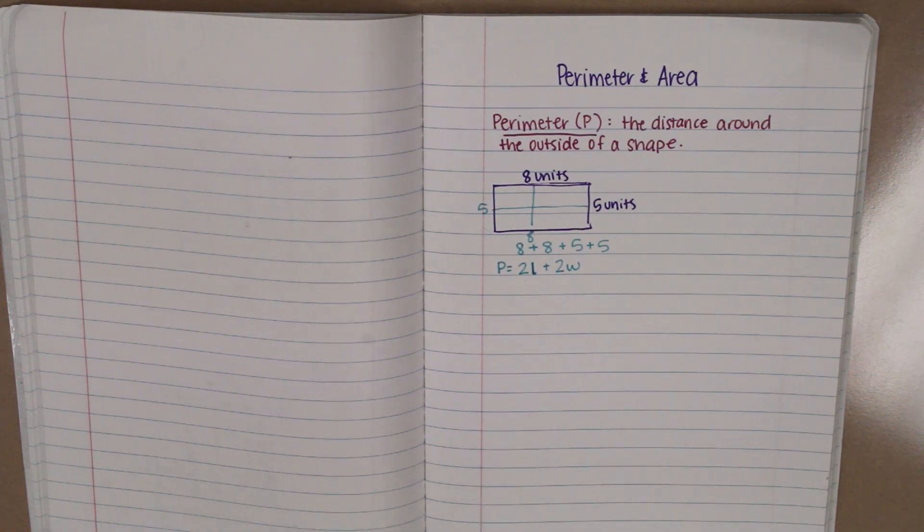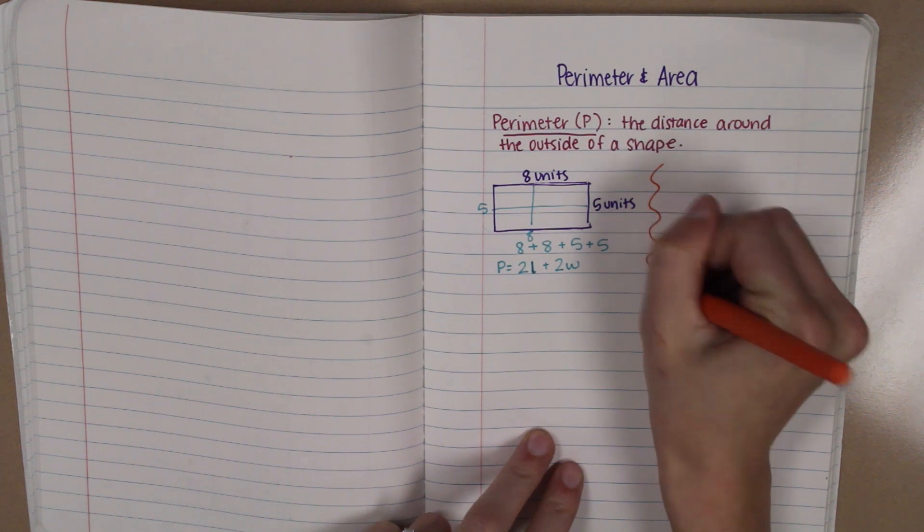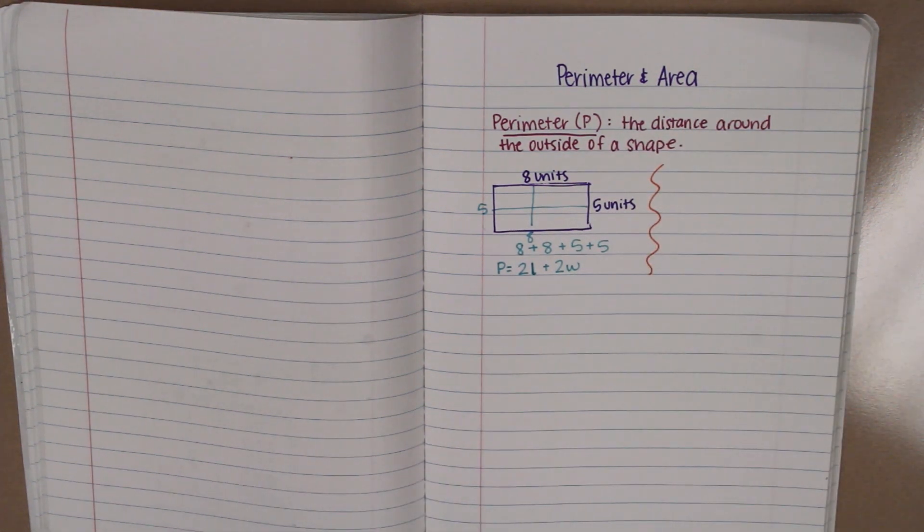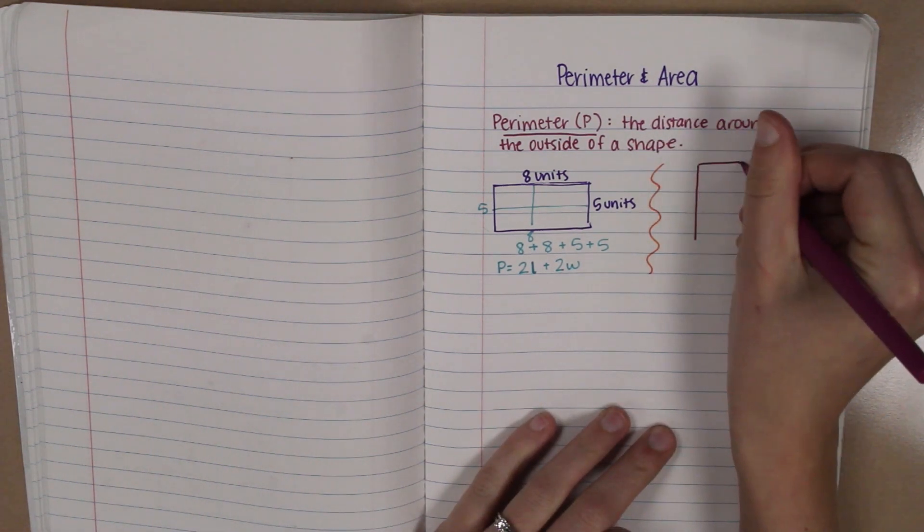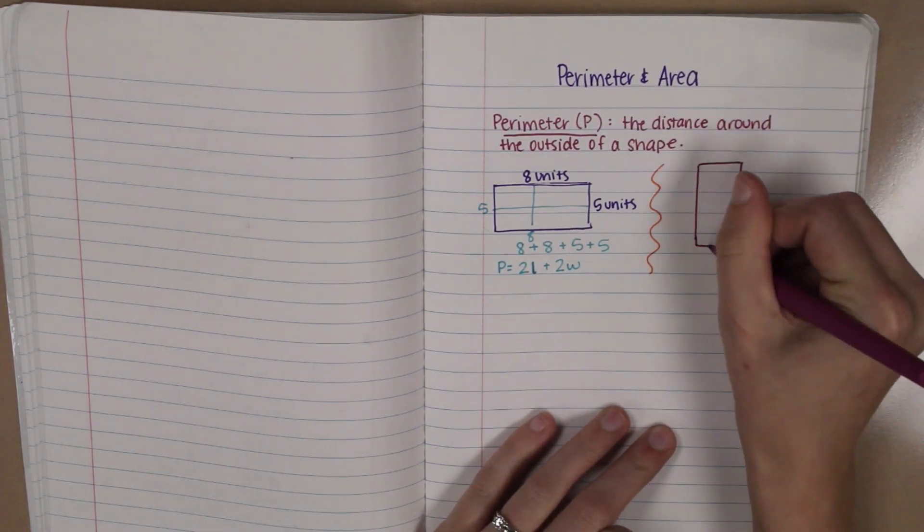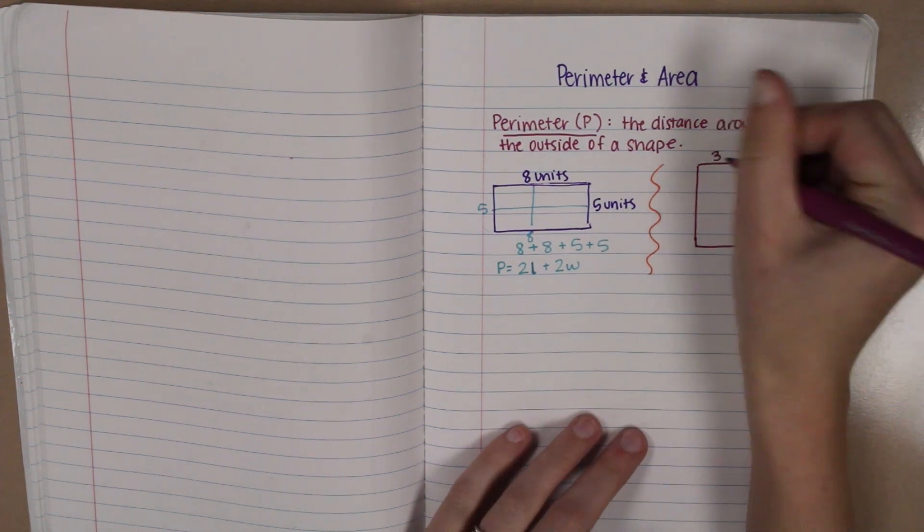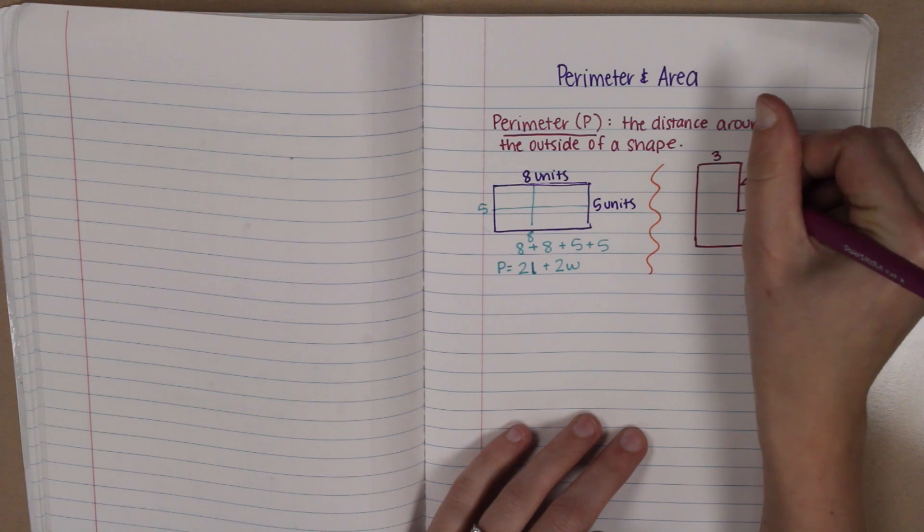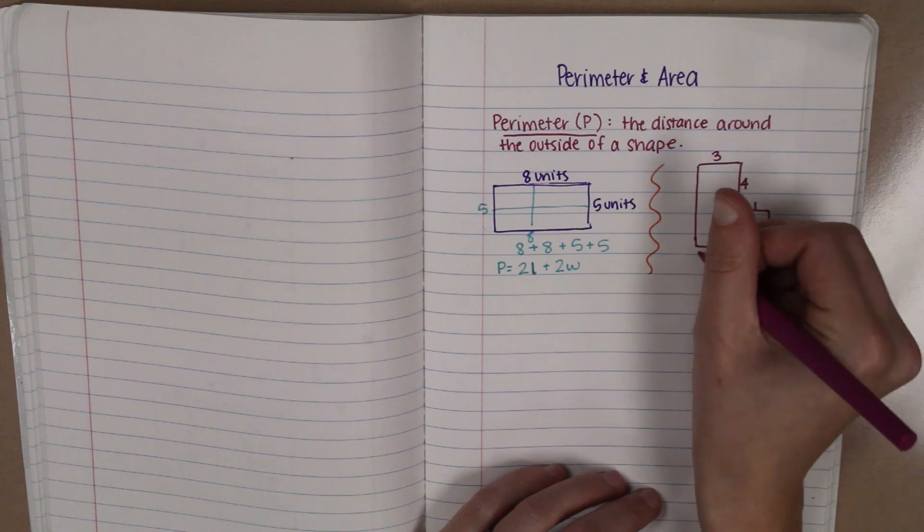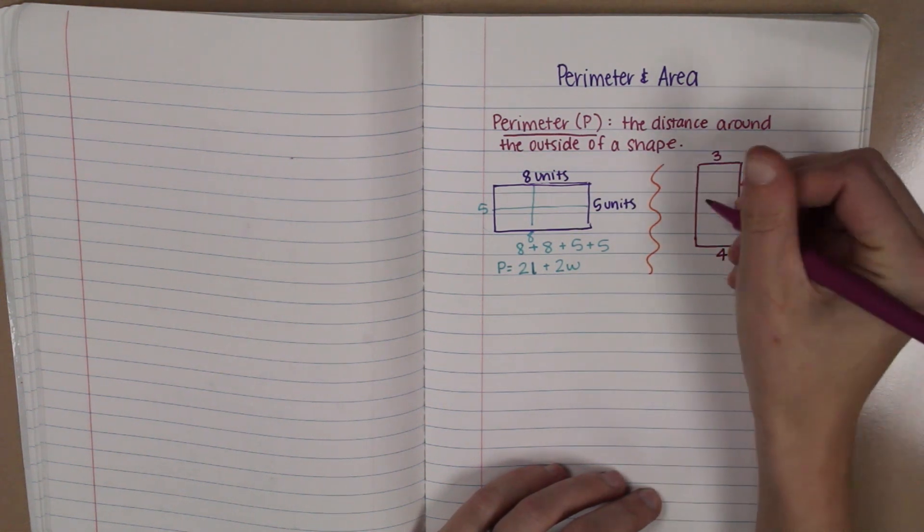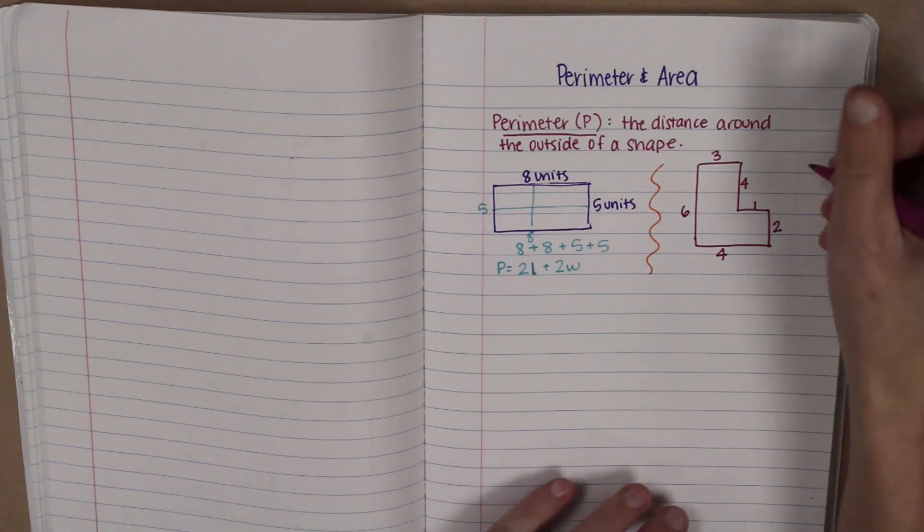It gets a little bit different though if you have an irregular shape. You can't just take two lengths and two widths and add them together. Let's say we had a funky shape like this. A big block L. And it had all of its sides labeled. So maybe it said three units. But this side was four units. This one's one. Not to scale. And this side was two units, four units, and six units. The way that we would find that, just kind of add up all of the sides.